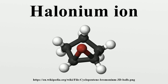Halonium ions formed from fluorine, chlorine, bromine, and iodine are called fluoronium, chloronium, bromonium, and iodonium, respectively. The simplest halonium ions are of the structure H-X⁺-H. Halonium ions often have a three-atom cyclic structure resulting from the formal addition of a halogenium ion X⁺ to a C=C double bond.